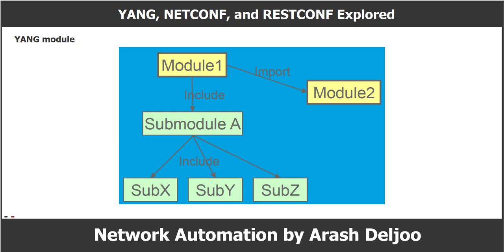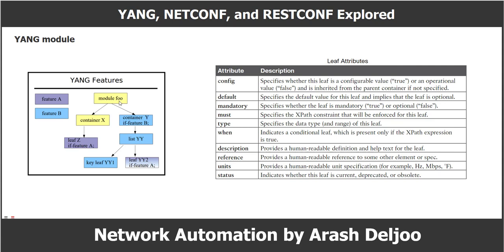Within a module, containers are used to group related nodes. Within a container, lists are used to identify nodes stored in a sequence. Inside each list, individual attributes are referred to as leaves. Attributes are used for things like names or descriptions. Each leaf also needs to have an associated type, such as boolean or string. This table lists the common attributes for leaf values, which we will review — though the full detail is beyond the scope of this video.